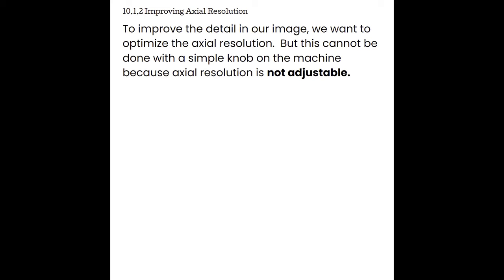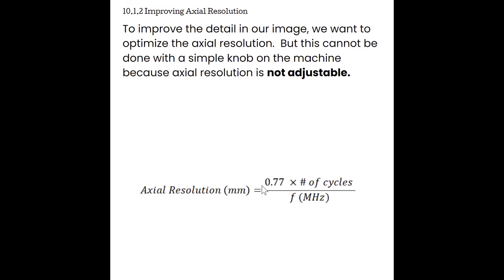If we combine the spatial pulse length formula, the wavelength formula, and the axial resolution formula, we get a new formula: axial resolution equals 0.77 times the number of cycles divided by the frequency. The primary formula to remember is SPL divided by 2. The 0.77 comes from applying a propagation speed of 1.54 mm/μs for soft tissue with the divide-by-2 factor. We still need the number of cycles because we're referring to spatial pulse length, then divide by frequency. This combined formula allows us to analyze the relationships that determine axial resolution.